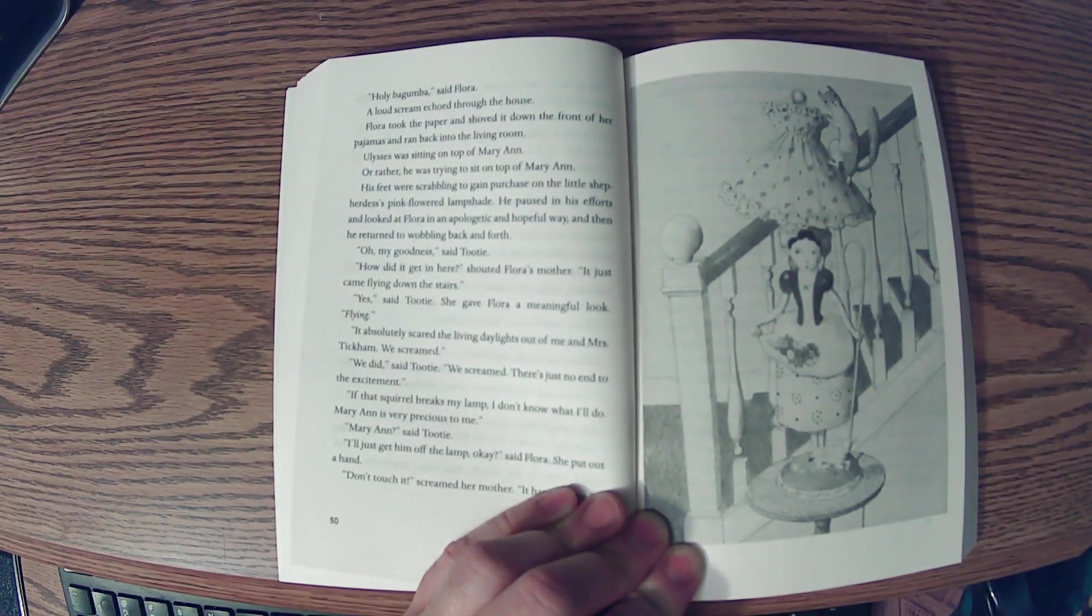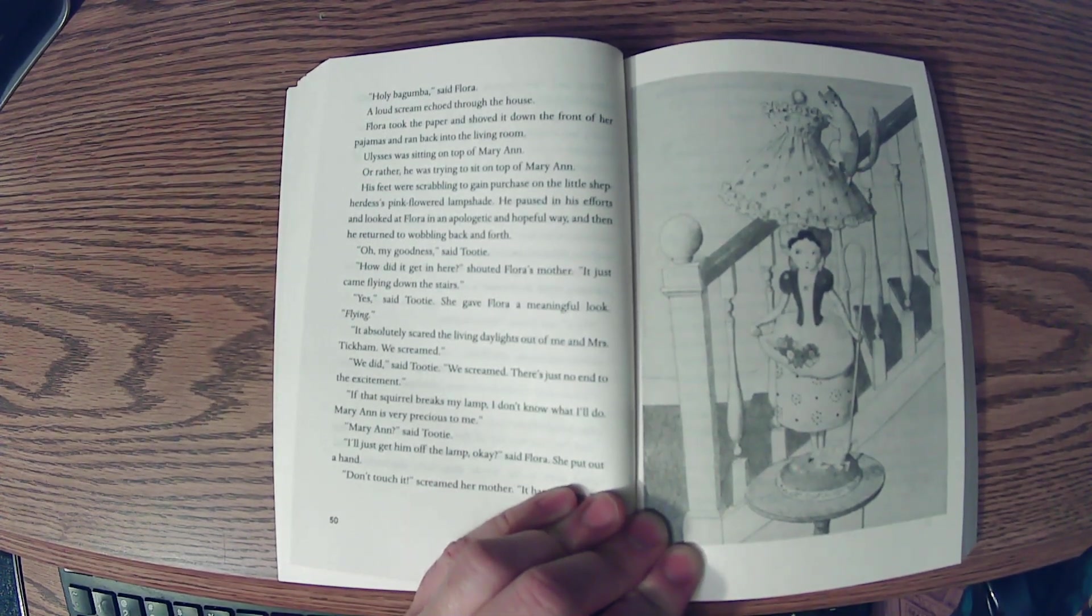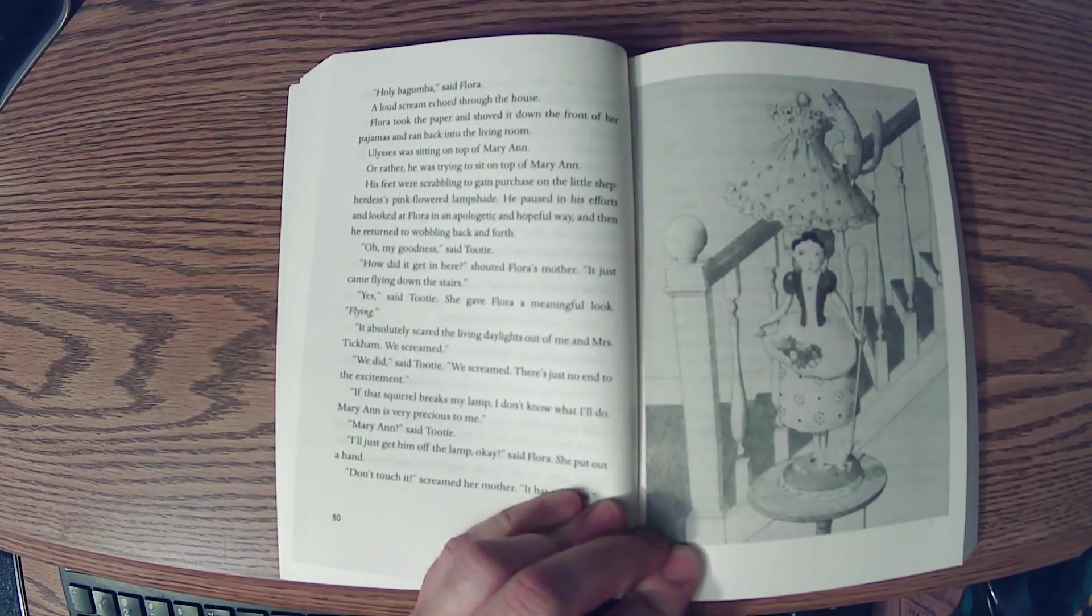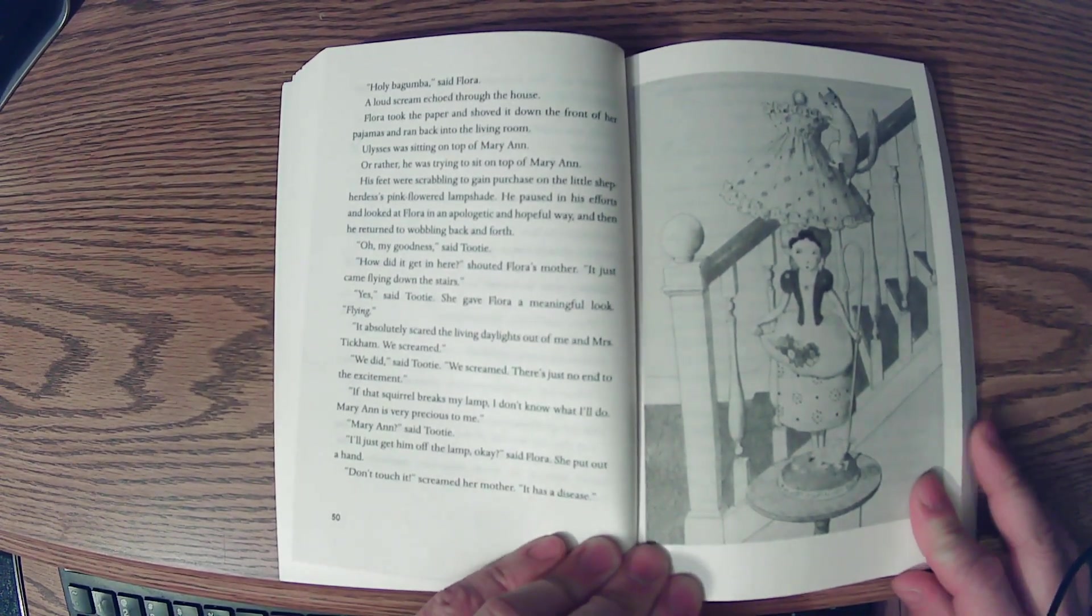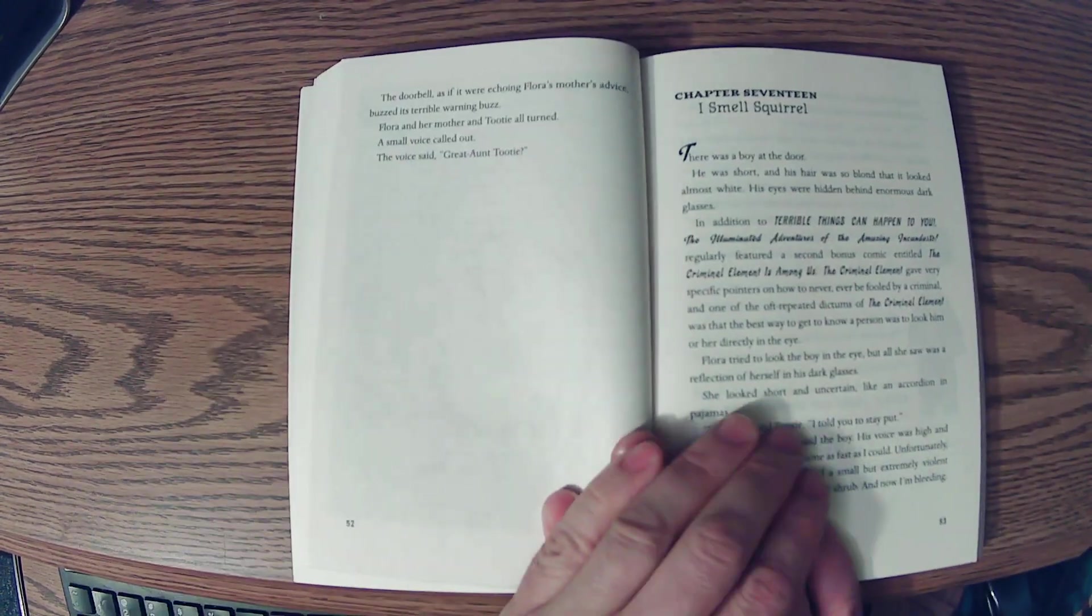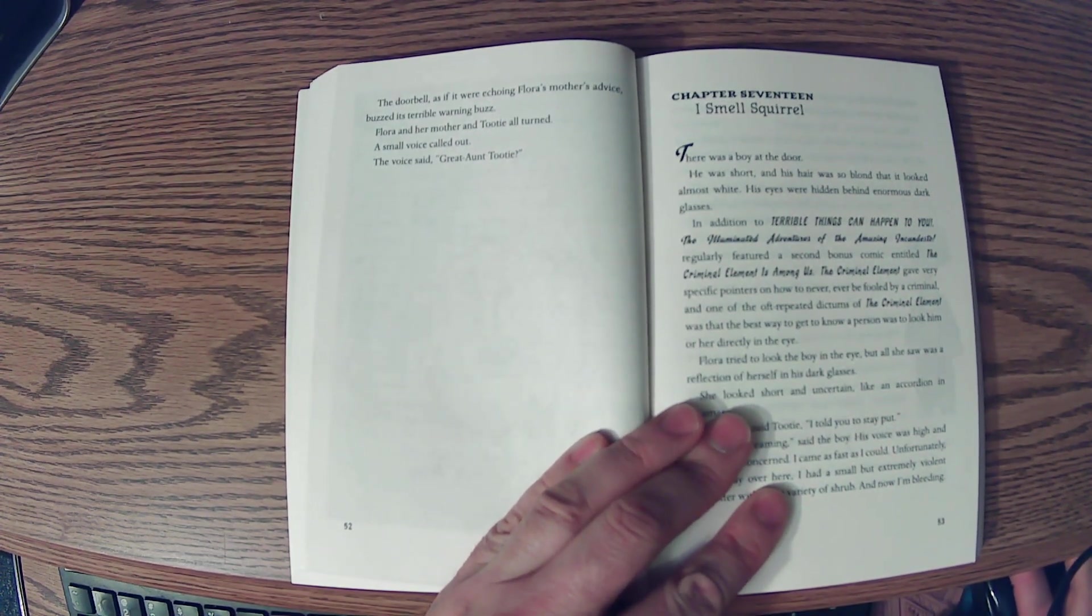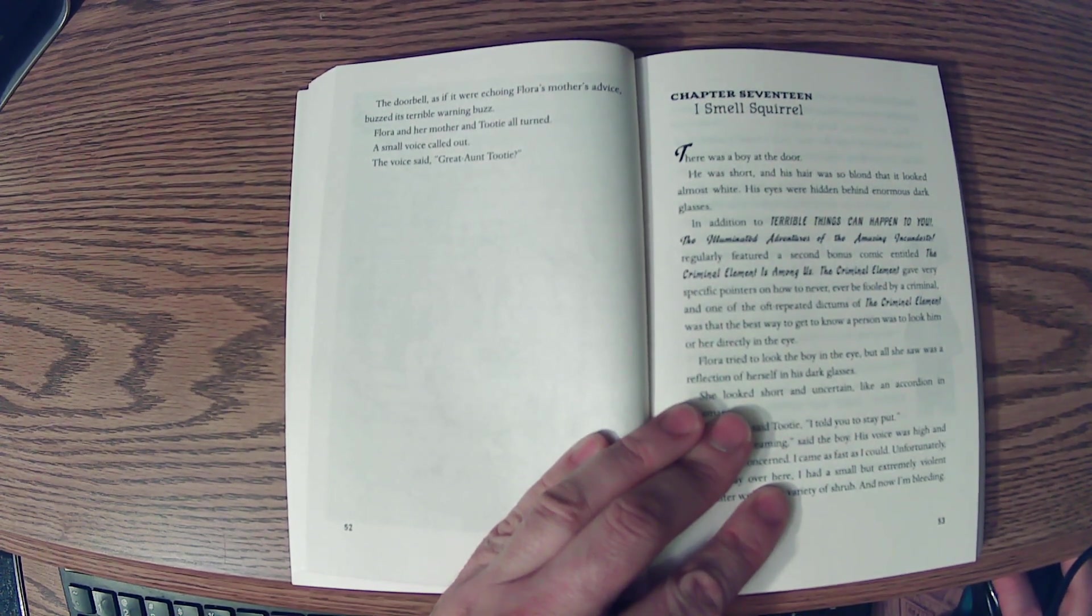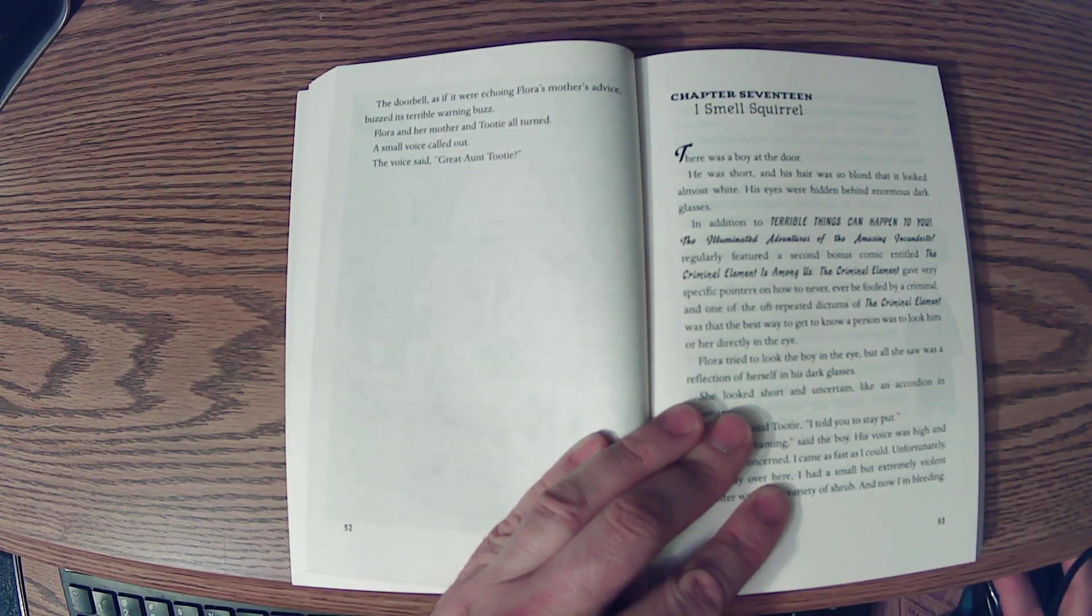There's just no end to the excitement. If that squirrel breaks my lamp, I don't know what I'll do. Mary Ann is very precious to me. Mary Ann, said Tootie. I'll just, I'll get him off the lamp, okay? said Flora. And she put out a hand. Don't touch it! screamed her mother. It has a disease! The doorbell, as if it were echoing Flora's mother's advice, buzzed its terrible warning buzz. Bzzzzz! Flora and her mother, and Tootie, all turned. A small voice called out. The voice said, Great Aunt Tootie!